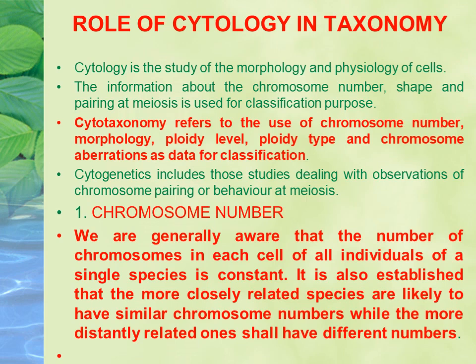When cytology is used in taxonomy, it is called cytotaxonomy. Here we study chromosome number, the level of chromosomes, and the differences between plants. The first point is chromosome number — normally every cell has a constant chromosome number except for cells which divide. Related species will have similar chromosome numbers, and this is one way we use cytology in taxonomy.